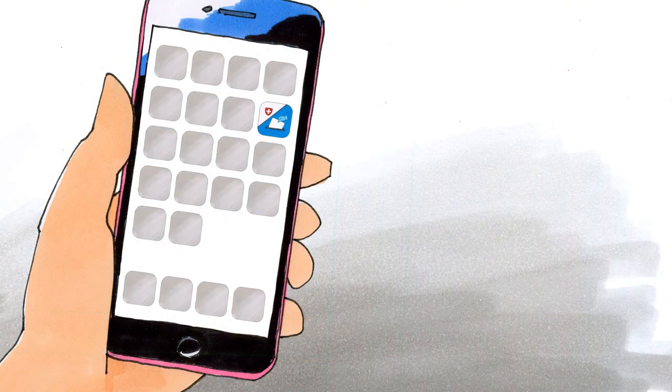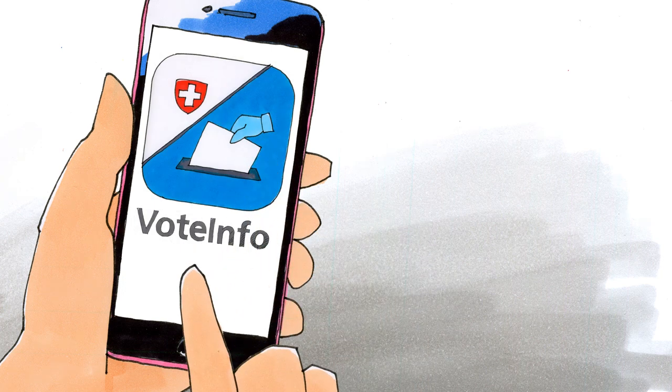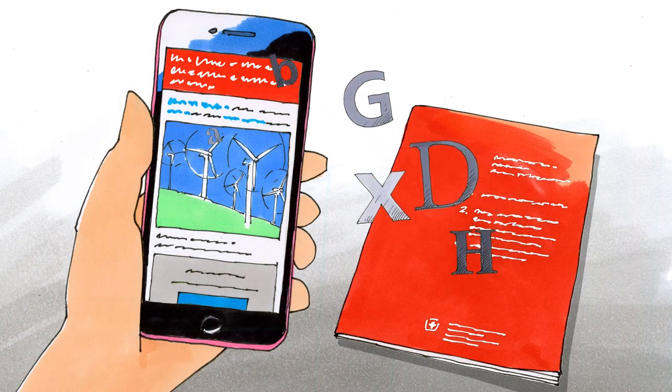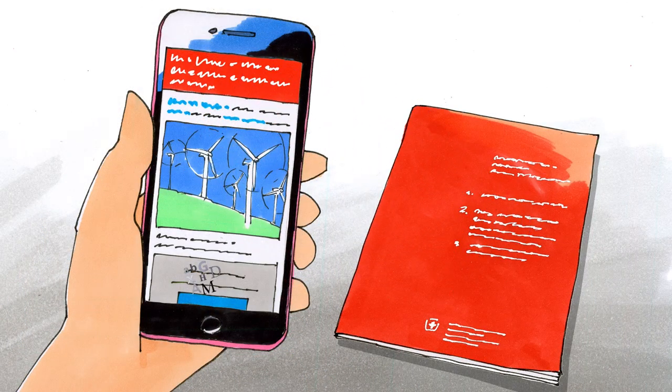This also happens in the run-up to a popular vote. The Federal Council provides official information on popular votes on its VoteInfo app. This includes the texts from the red pamphlet explaining the issues, along with explanatory videos.